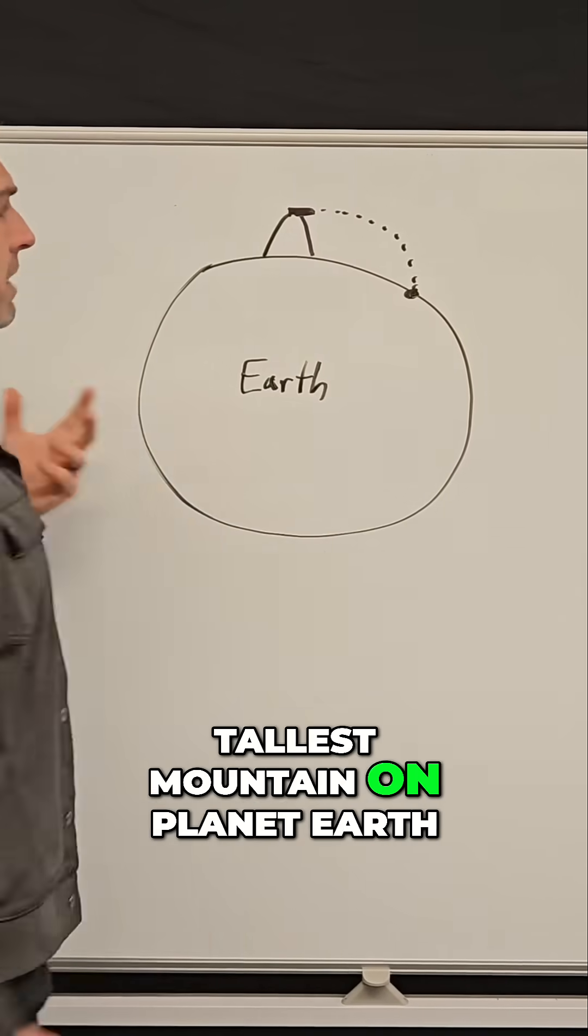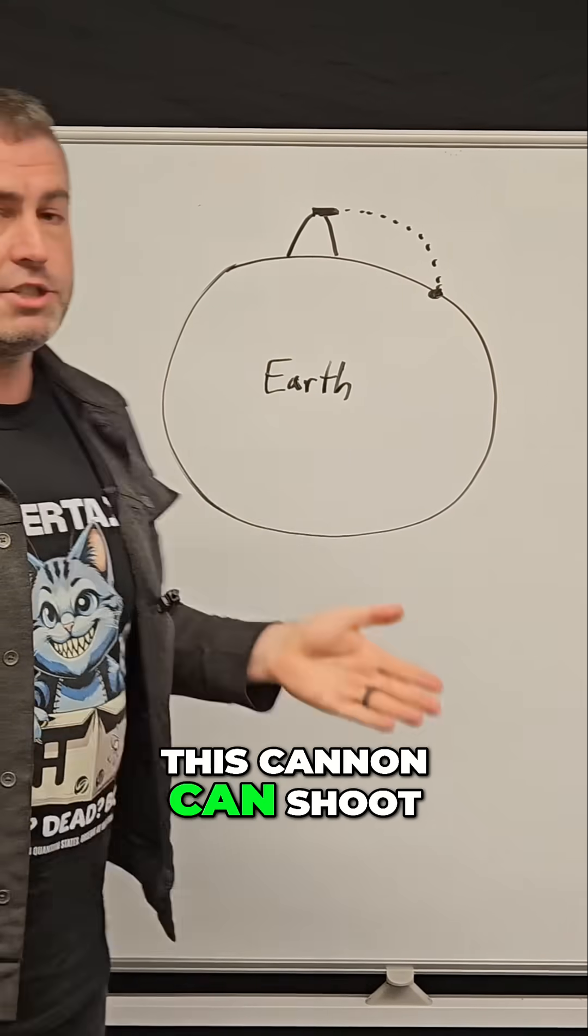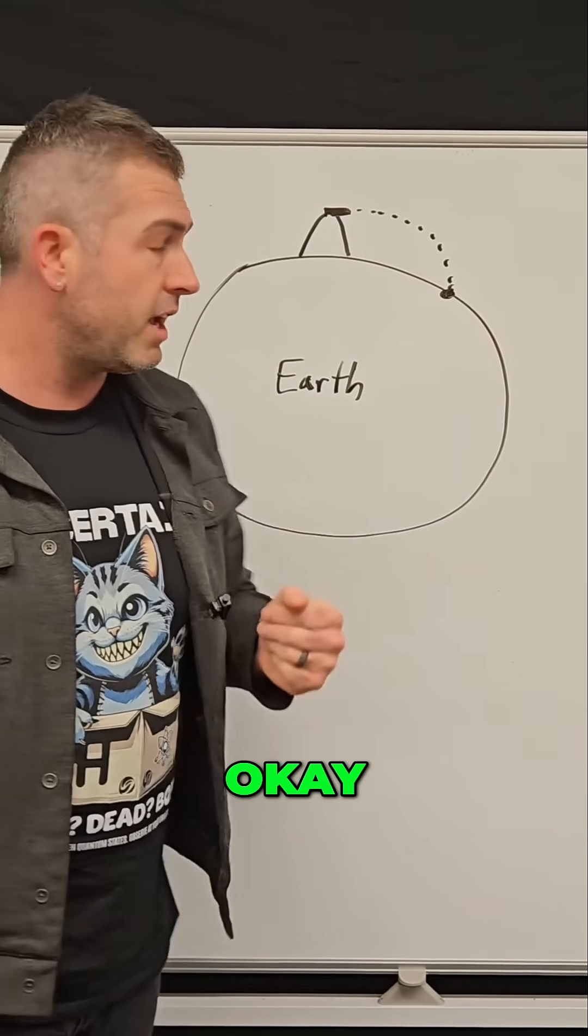So imagine on the tallest mountain on planet Earth, we put a big cannon there, and let's assume that this cannon can shoot objects really, really fast.